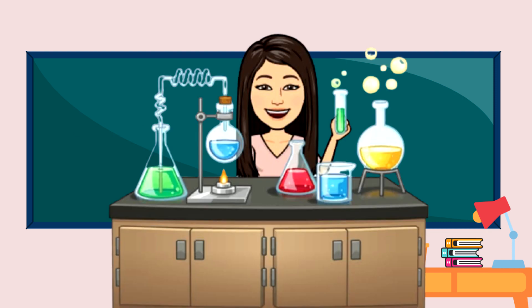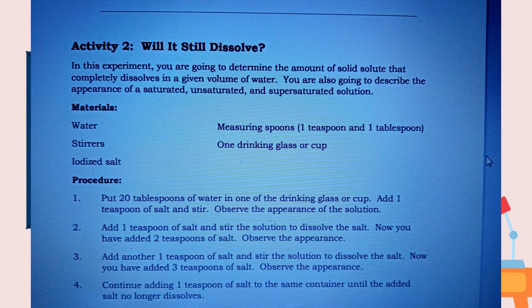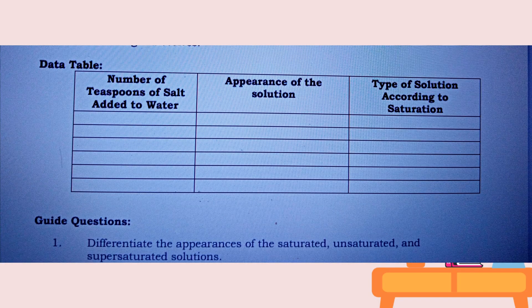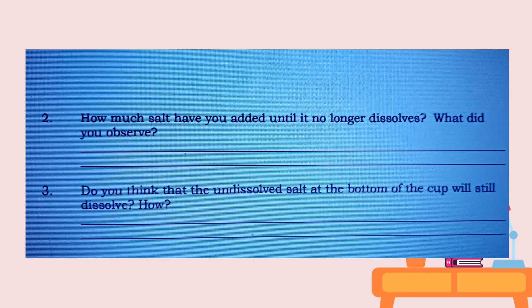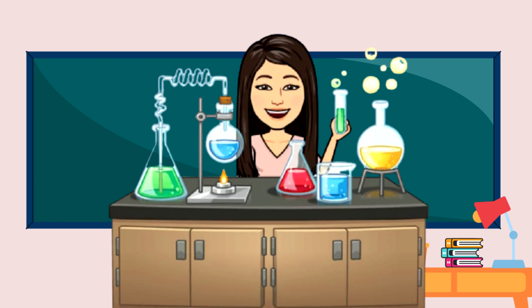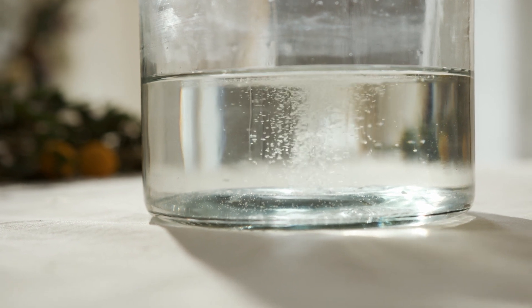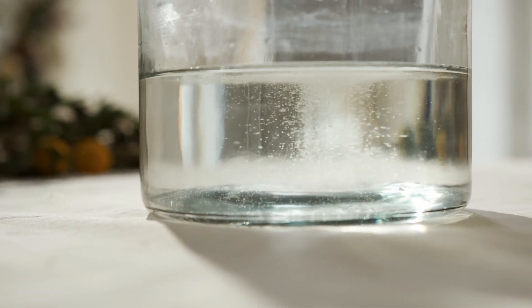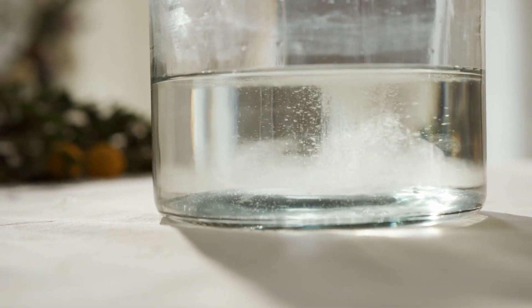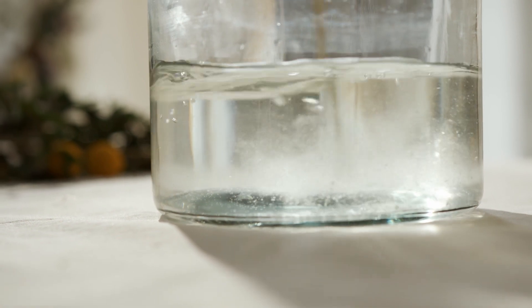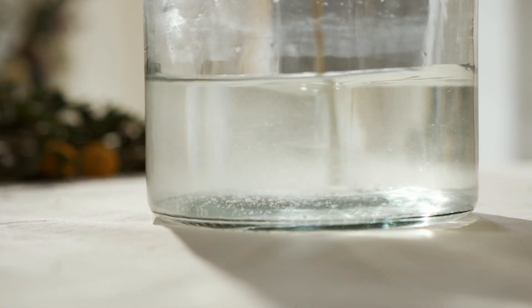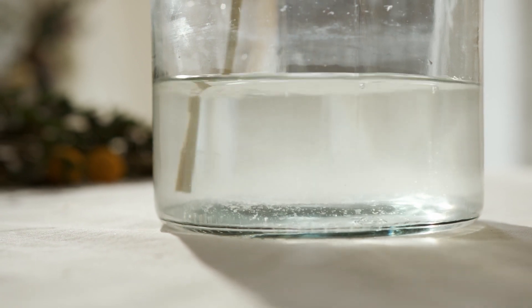To better understand the lesson, we will have a simple experiment. In the experiment, after adding 1 teaspoon of salt in 20 tablespoons of water, and after we stir it, we observed that the salt dissolves. It means that the salt can still be dissolved by water. This is what we call an unsaturated solution.